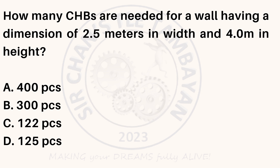How many CHBs are needed for a wall having a dimension of 2.5 meters in width and 4.0 meters in height? A. 400 pieces. B. 300 pieces. C. 122 pieces. D. 125 pieces.